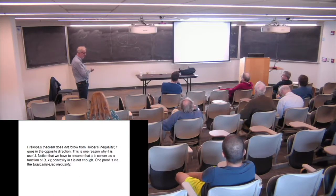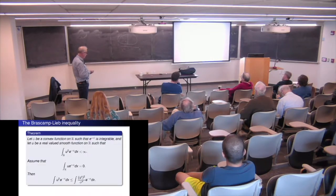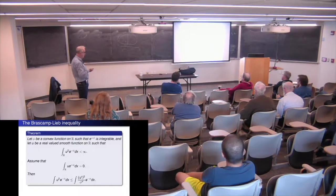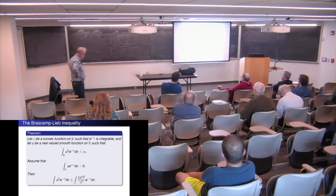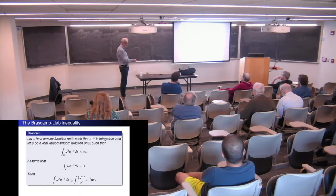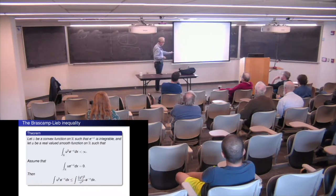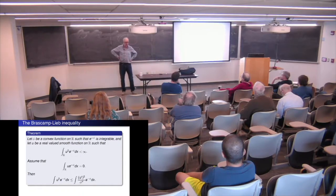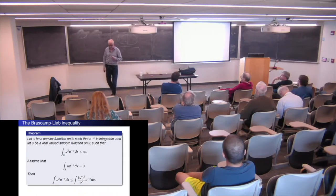I'm going to sketch one proof, because it has a lot to do with what I'll say in the complex version. This is via the Brascamp-Lieb inequality, a proof discovered by Brascamp and Lieb in the 1970s. I'll write it down in one real variable, which is really the main case. You start with a convex function on R and look at the L^2 space of functions U that are square-integrable with respect to the weighted measure e^{-phi}. Assume the mean value of U is zero, and you have the estimate that the L^2 norm of U is bounded by the L^2 norm of its derivative.